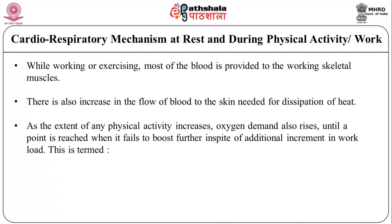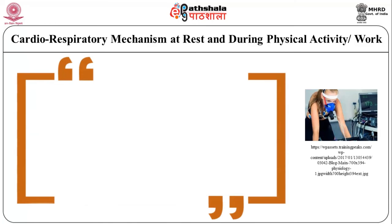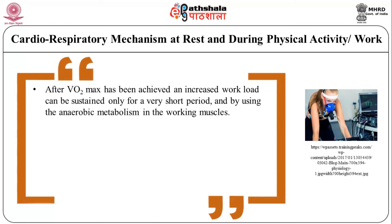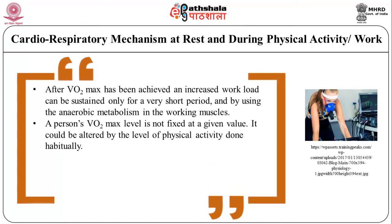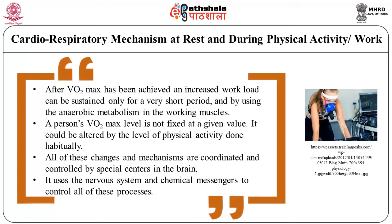As the extent of physical activity increases, oxygen demand also increases until a point is reached when it fails to increase further despite additional increases in workload. This is termed maximum oxygen consumption, abbreviated as VO2 max. After VO2 max has been achieved, an increased workload can be sustained only for a very short period using anaerobic metabolism in the working muscles. A person's VO2 max level is not fixed; it can be altered by the level of habitual physical activity. All these changes and mechanisms are coordinated and controlled by special centers in the brain using the nervous system and chemical messengers.